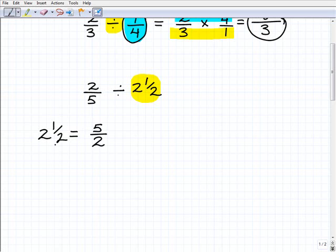So that's how you turn a mixed number, in other words, a number and a fraction, like so, into an improper fraction. So that's 5 halves. So really, this problem here is 2 fifths divided by 5 halves. So I'm going to write that 2 and 1 half this way. Remember, they're equal to one another.